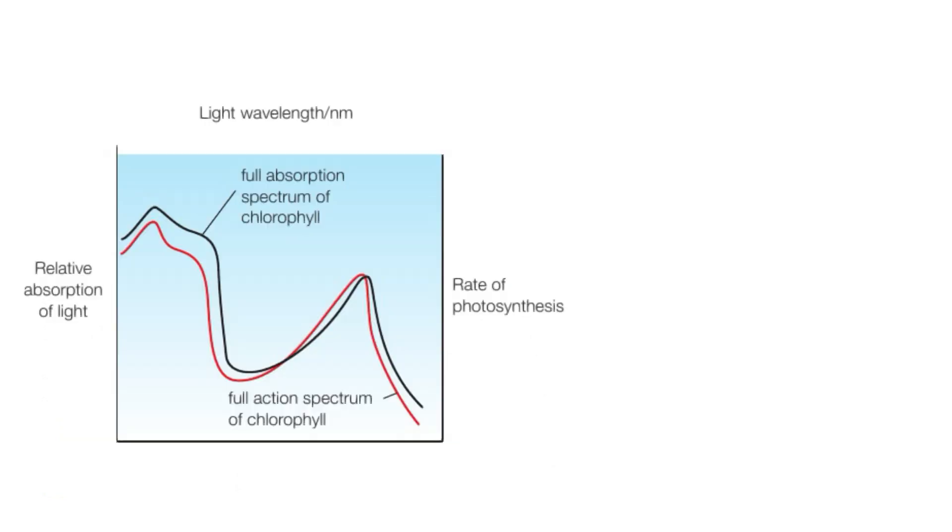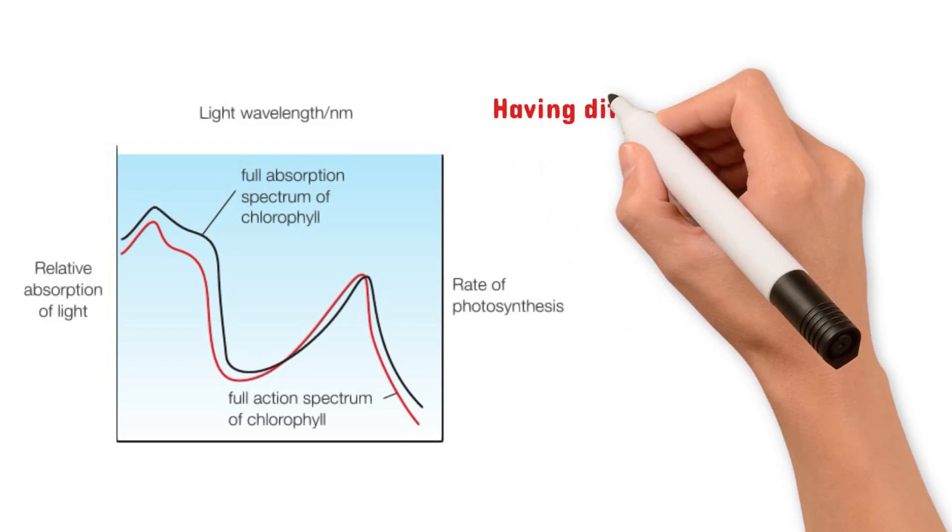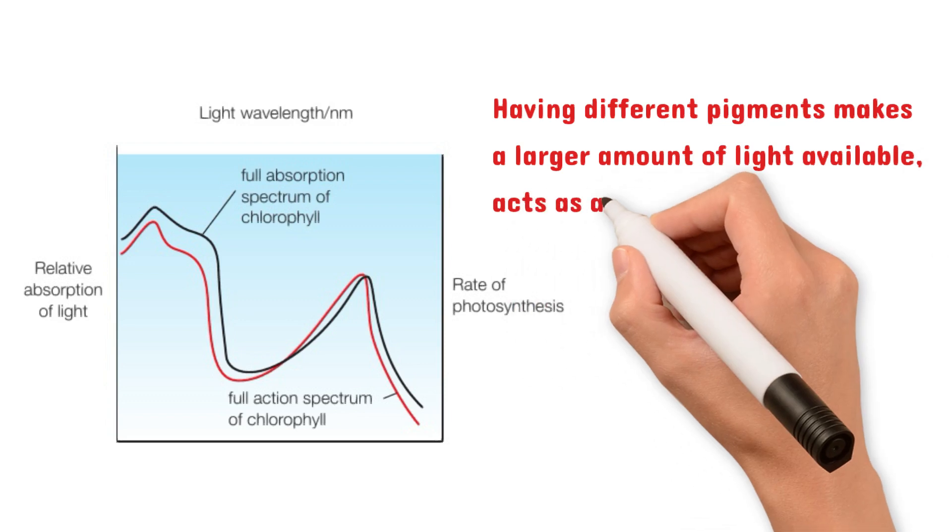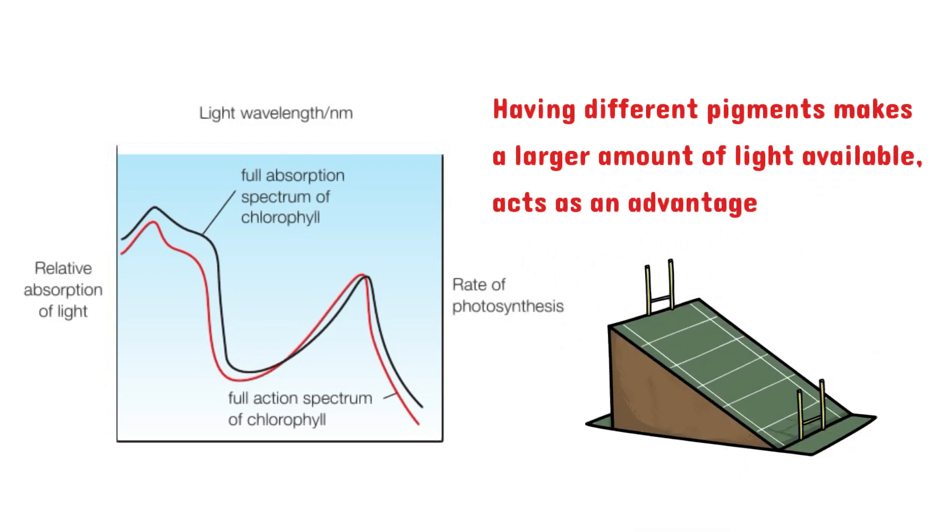If we combine the action spectrum and the absorption spectrum, we can see that they're almost identical. And this proves to us that having different pigments makes a larger amount of light available, which acts as an advantage.